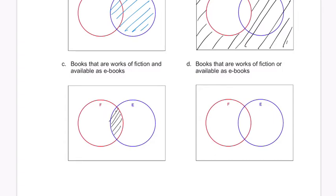D says books that are works of fiction or available as e-books. So one or the other. So fiction is here. And then I'm going to add on to that as e-books there. I'm not going to color in the middle part twice. That would be an overlap. Right? So it's that region right there.